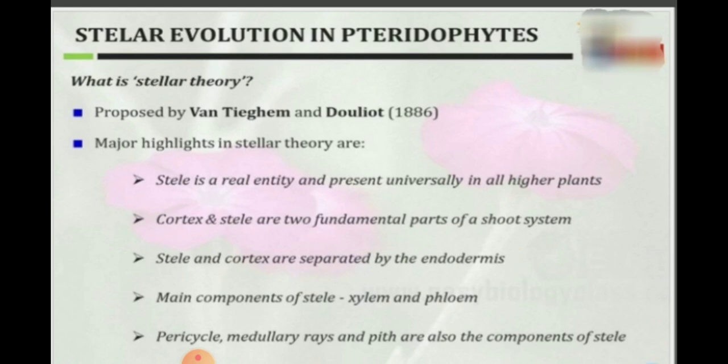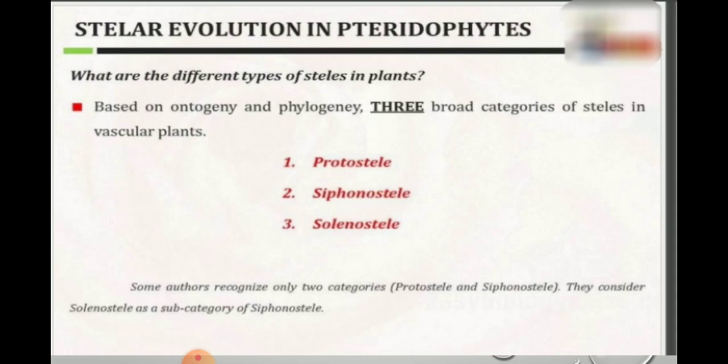Cortex and stele are two fundamental parts of a shoot system. Stele and cortex are separated by the endodermis, and the main components of stele are xylem and phloem. The pericycle, medullary ray, and pith are also components of the stele. Now we see the different types of stele.